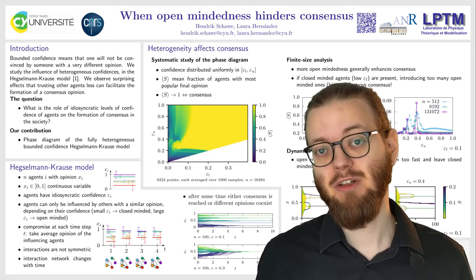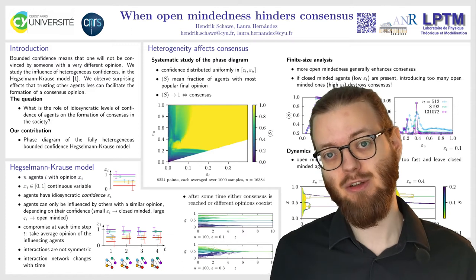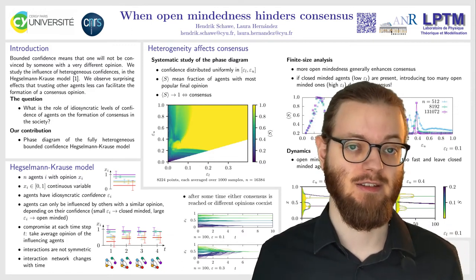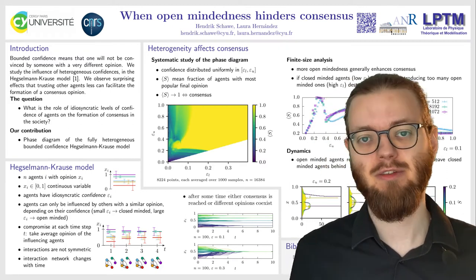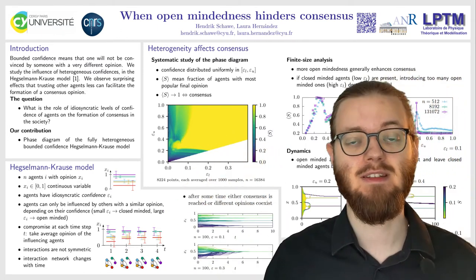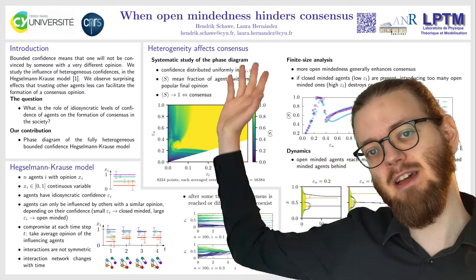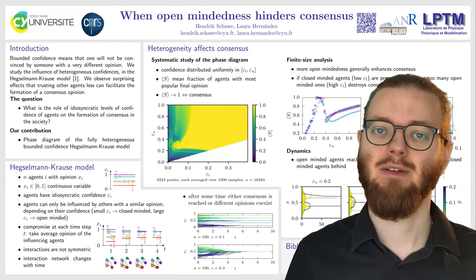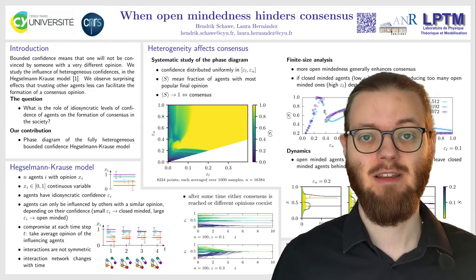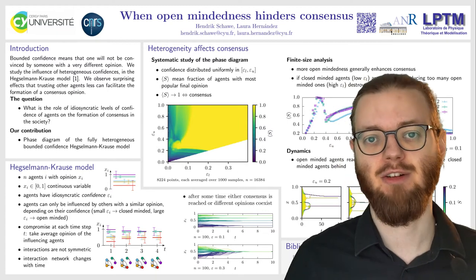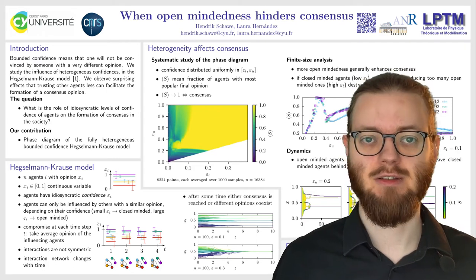If we look at the phase diagram, where we measured basically if there is consensus in the end or if there is no consensus, over the plane of the most extreme confidences, you can see that there is quite some complicated structure in it. This is where the title of this talk comes in, because we actually observe the counterintuitive phenomenon that increasing the open-mindedness — increasing the confidence range of the average agent — actually leads to less consensus in the society.